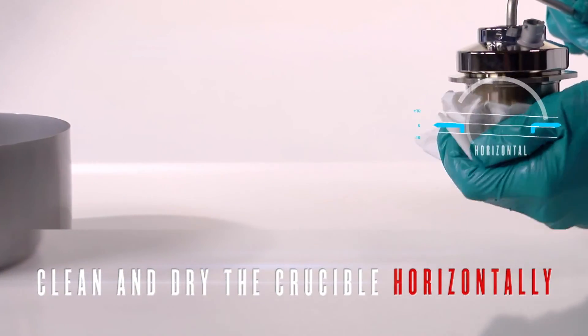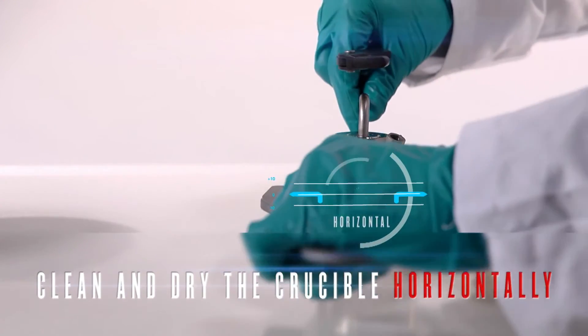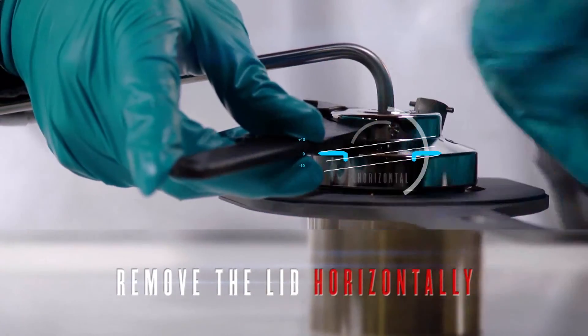Remove the crucible from the bath and dry it with a soft tissue. Use the clamp and spanner to unscrew the cover. Handle this step with care to make sure the sample liquid does not splash on the inside part of the cover.